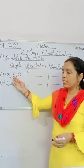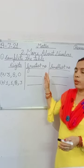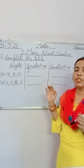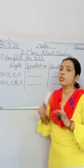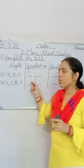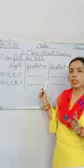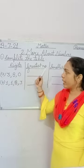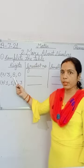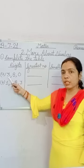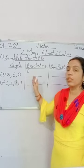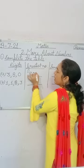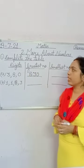Agar aapko bada number banana hai, toh aapko apne digits ko bade se chote arrange karna hoga — without using commas; comma ka use nahi karna. In part A, you have digits 3, 8, and 0. For the greatest number: 8 is greatest, then 3, then 0. So write 830 — that means 830 is the greatest number.